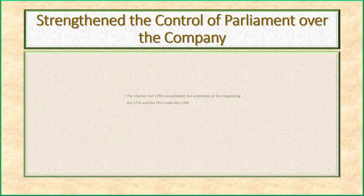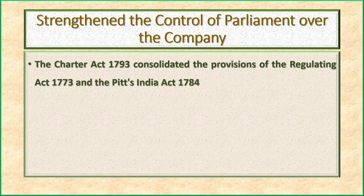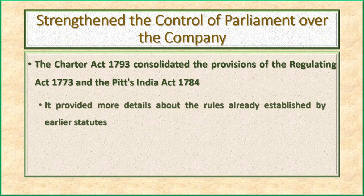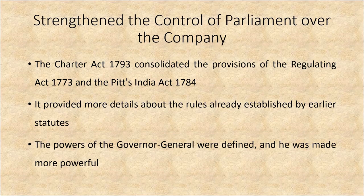Point three: It strengthened the control of Parliament over the company. The Charter Act 1793 consolidated the provisions of the Regulating Act 1773 and Pitt's India Act 1784. It provided more details about the rules already established by earlier statutes. The powers of the Governor-General were defined, and he was made more powerful.